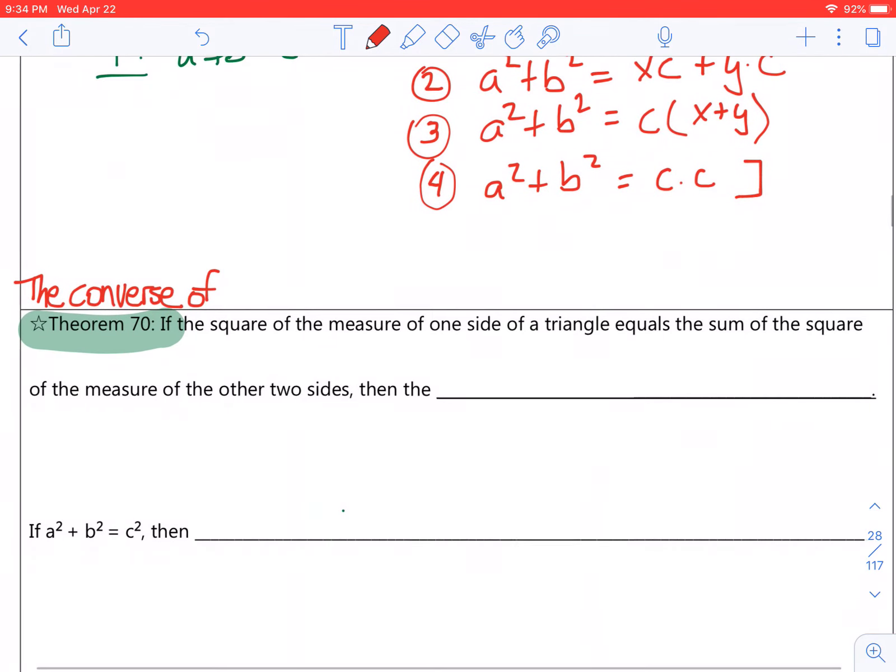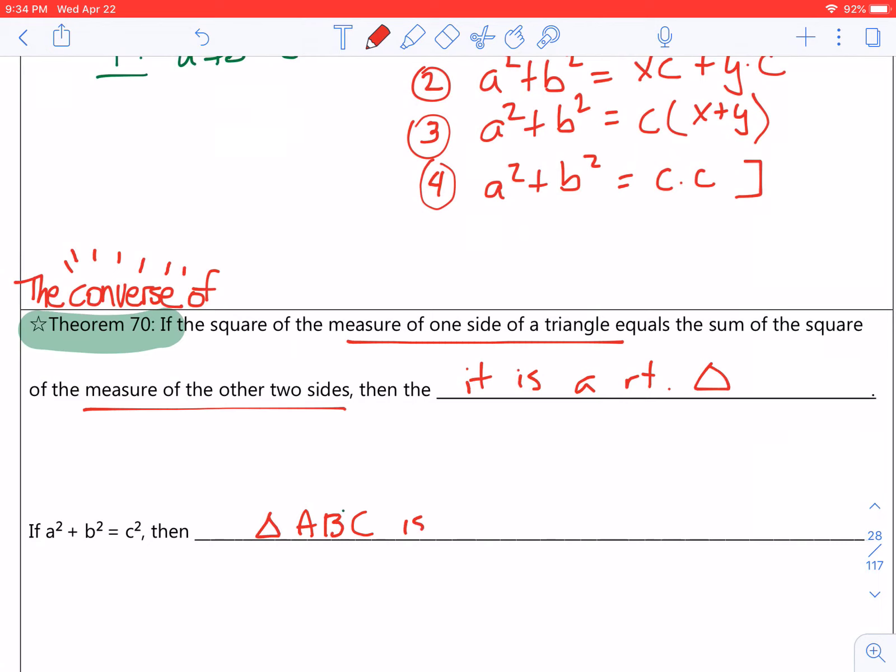Keep in mind, if you know the measures of one side of the triangle equals the sum of the measures of the other two sides, then it is a right triangle. So, this is called the converse. Yes, remember that's when you flip it around. Okay. Triangle ABC is right.